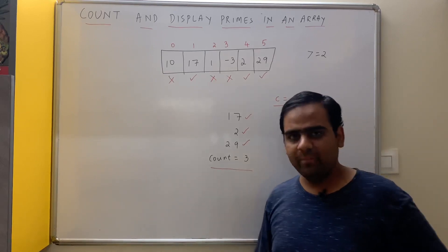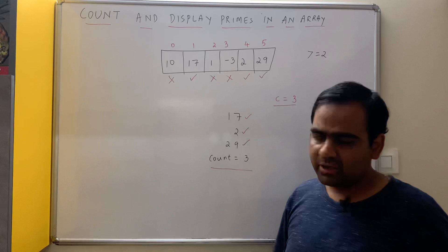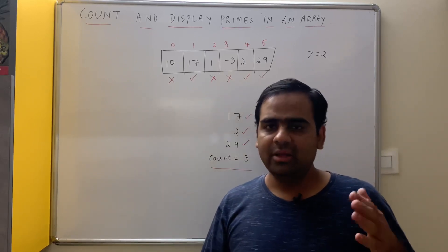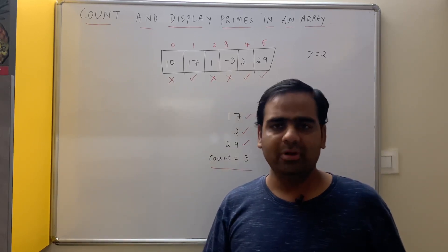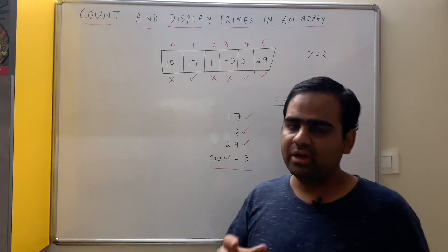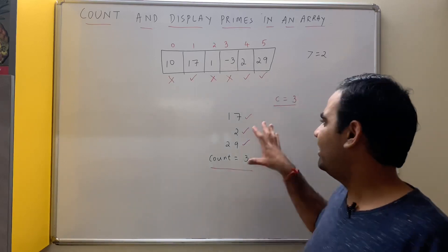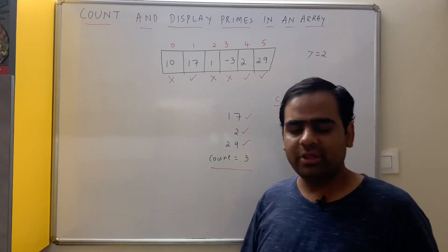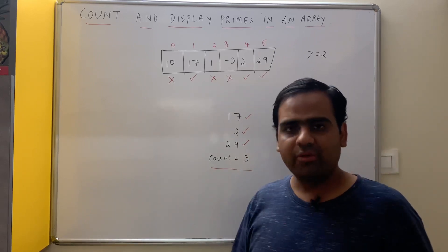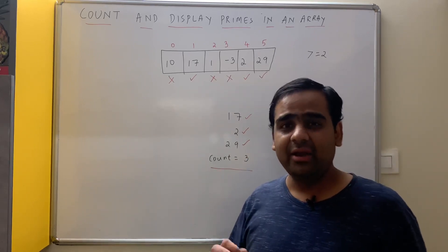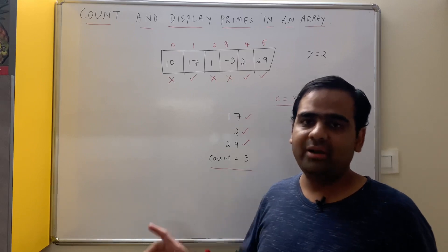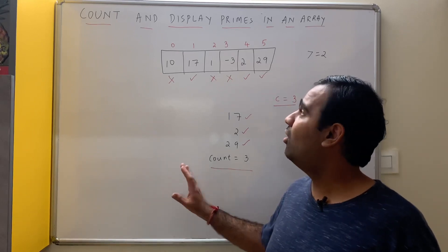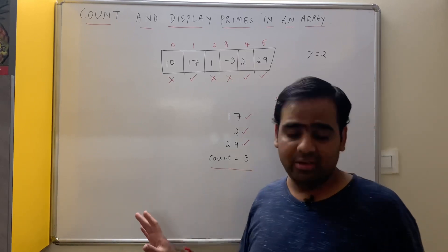And how do we find if a number is prime or not? The least prime factor of a number is less than or equal to the square root of that number — we already know this. We use that logic to find if a number is prime or not. I hope you understood how to solve this. Please pause the video here and try to write the program to find and display the count of all the primes in an array.